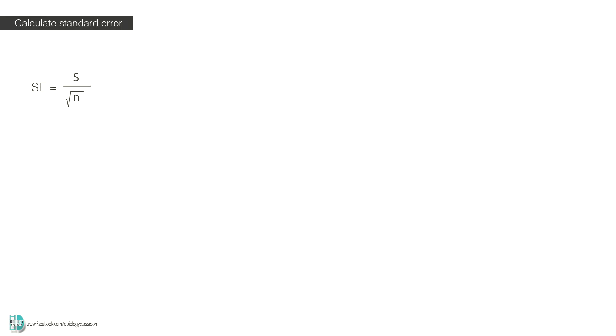This is the formula we use to calculate standard error. S is the sample standard deviation. N is the sample size or the number of observations. We will use an example to understand this calculation.